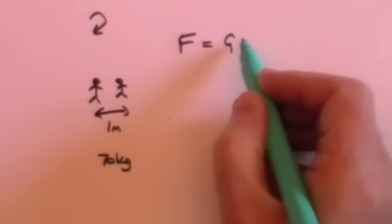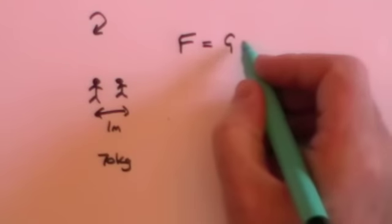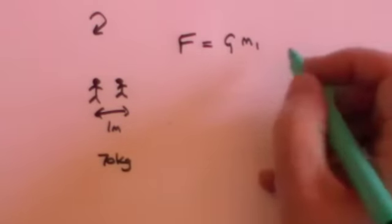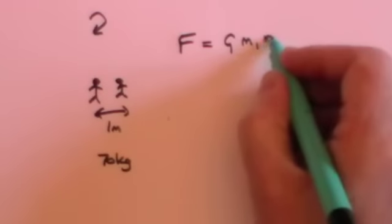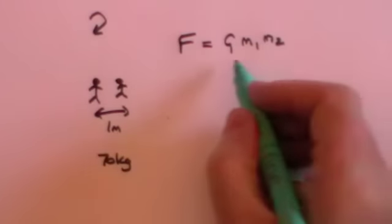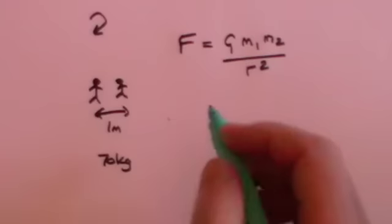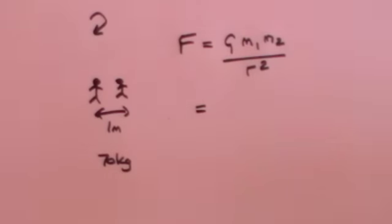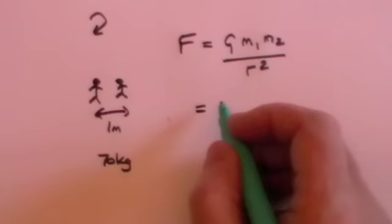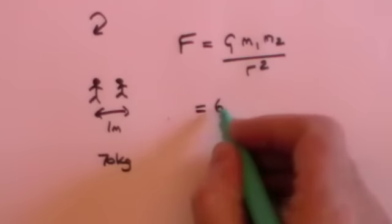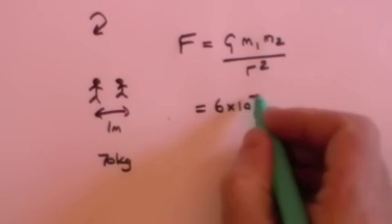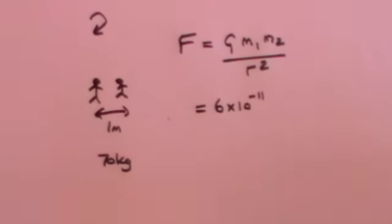Let's just work out what that force is. As we've said, the force is equal to G times the mass of one body multiplied by the mass of another body divided by the distance between them, squared. Now I haven't yet told you what this constant G is. It's actually a very small number — it's approximately 6 times 10 to the minus 11. So that's very small.